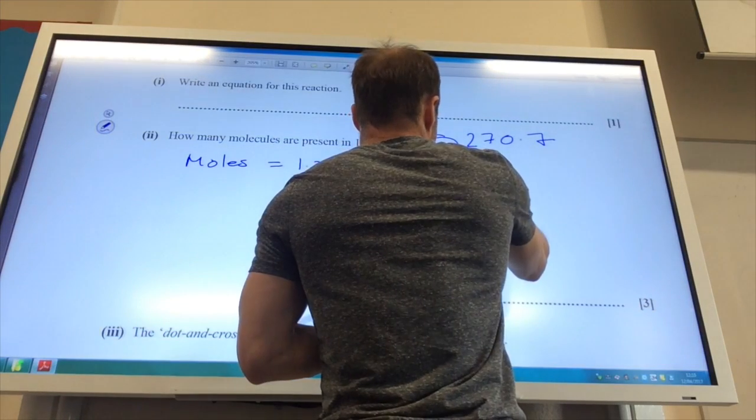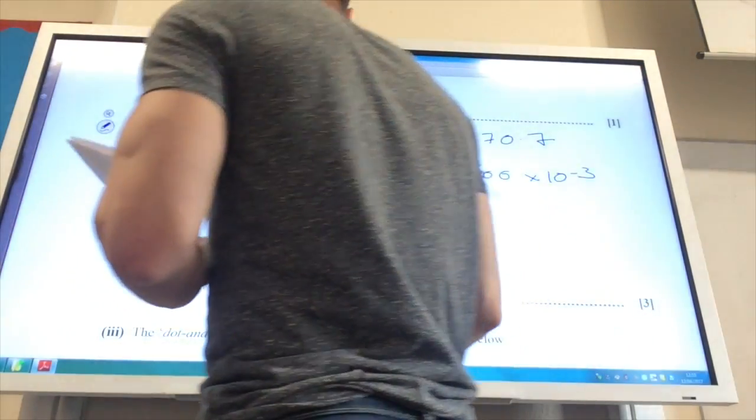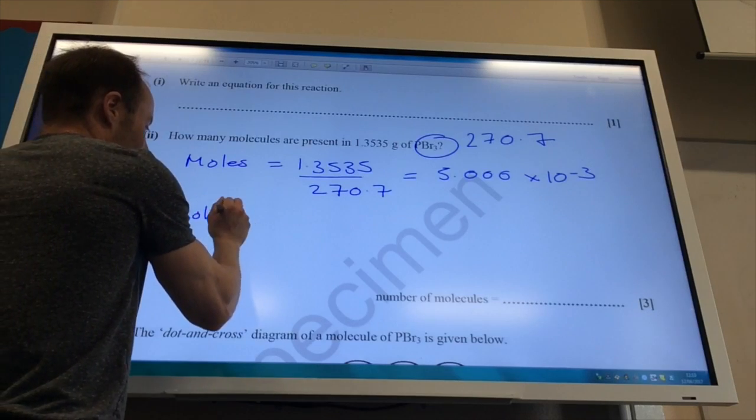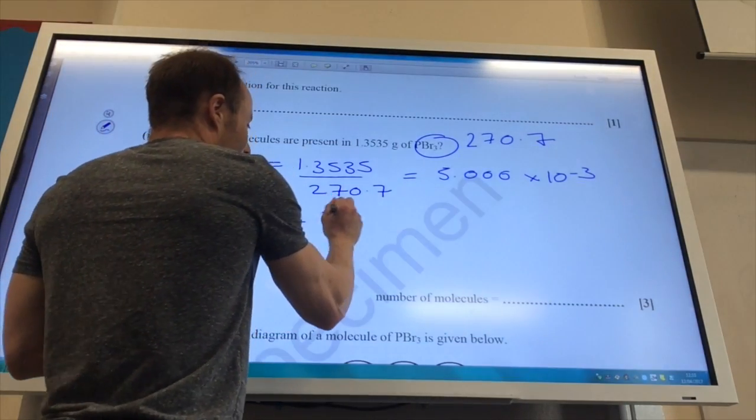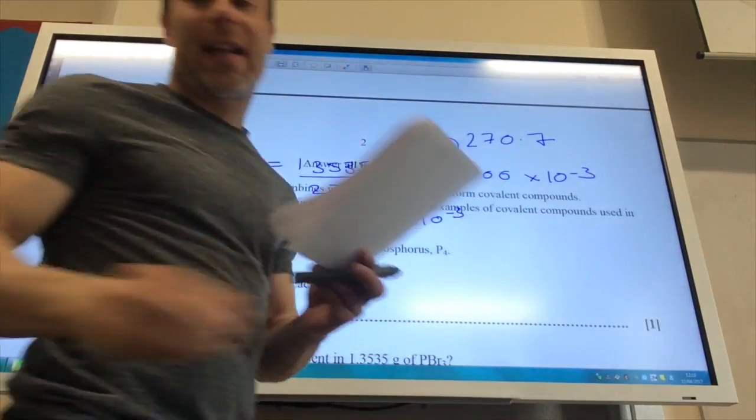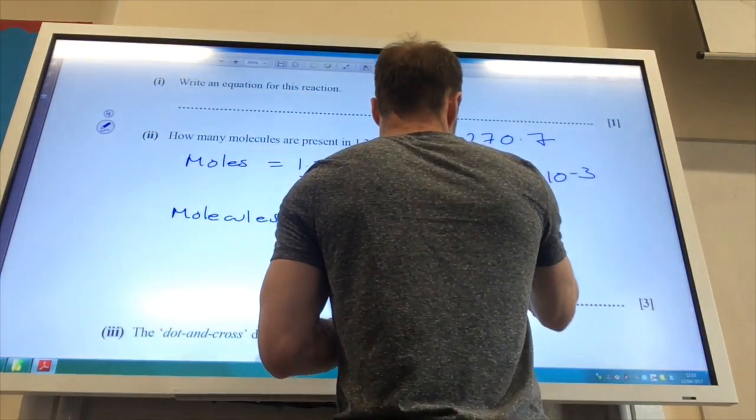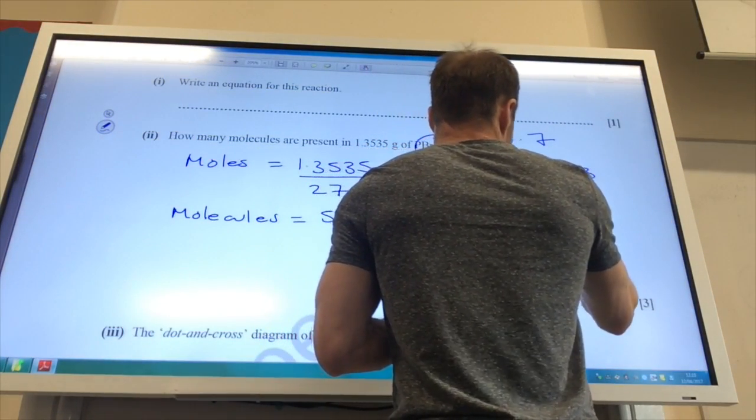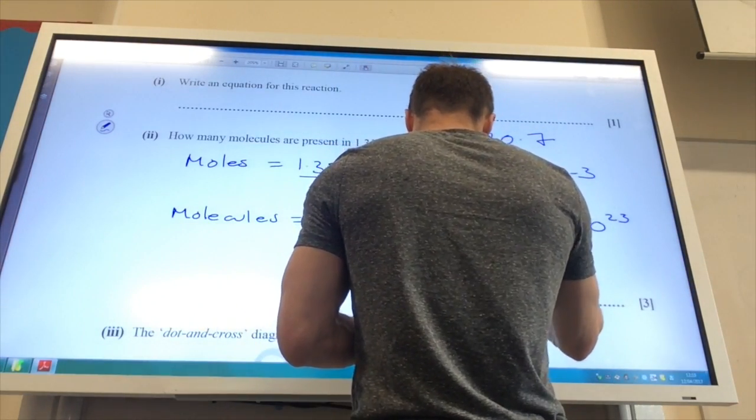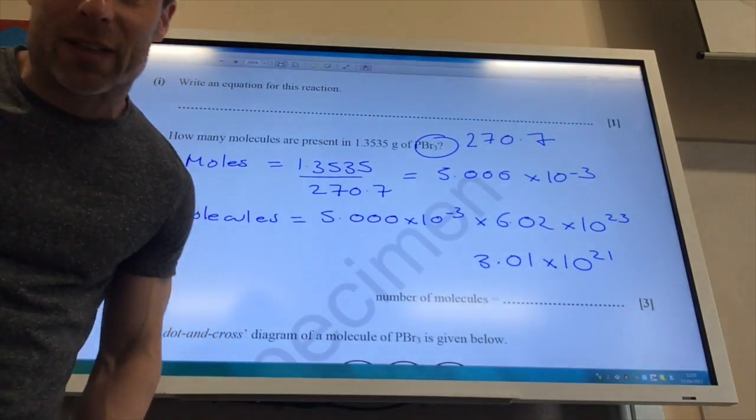So moles is going to equal 1.3535 divided by 270.7. That comes to 5.000 times 10 to the minus 3 moles. And then remember, we times that number by Avogadro's number. So the number of molecules is equal to 5.000 times 10 to the minus 3 times by Avogadro's number, which is on your data sheet, and you get 6.02 times 10 to the 23, and you get a whopping number of 3.01 times 10 to the 21.